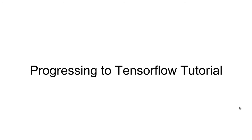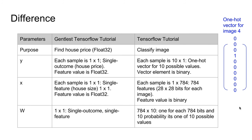Now we are going to compare this gentlest TensorFlow tutorial with the actual TensorFlow tutorial. In this tutorial, our purpose is to find the house price, which is a float value. In the TensorFlow tutorial, we are trying to classify an image — whether an image is 0, 1, 2, and so on. So y in the TensorFlow tutorial is a one-hot vector for 10 possible values: since there are 10 possible values, there are 10 elements, and if the image is 4, only the fourth element from the top will be 1 and the rest will be 0.